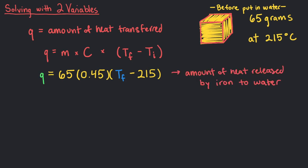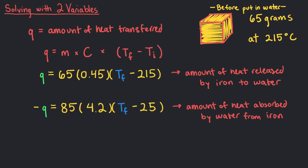The equation for the amount of heat absorbed by the water looks like this: negative q equals 85 times 4.2 times Tf minus 25. There's a negative in front of the q because although the amount of heat absorbed by the water equals the amount of heat released by the iron, the signs of released and absorbed are the opposite. The negative is to balance the sign so that we can only focus on the magnitude.